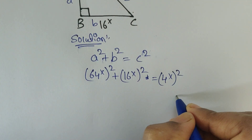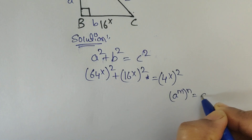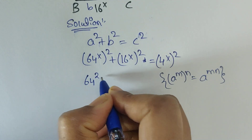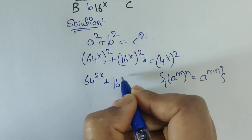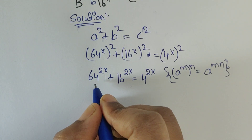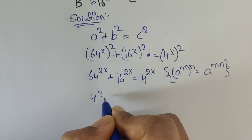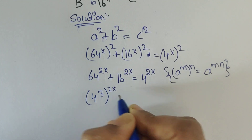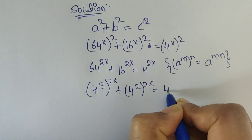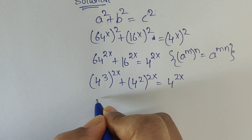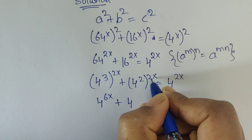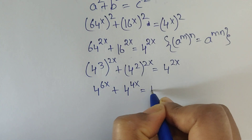So here we can apply this formula: a to the power of m, whole to the power of n, equals a to the power of m times n. Here we can write 64 as 4 cubed, so 4 cubed equals 64. And 16 can be written as 4 squared. Applying the formula: 4 to the power of 3 times 2x, which is 6x, plus 4 to the power of 2 times 2x, which is 4x, equals 4 to the power of 2x.